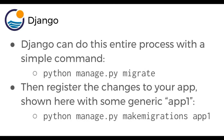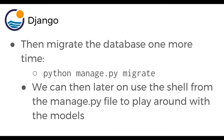We talked about this earlier in the course when we got a warning from Django telling us to do this migrate call. But now, since we actually are going to work with models, we can do it. After that, we then register the changes to our app, shown here with some generic app. So we would say python manage.py makemigrations and then your application name — app1, first app, whatever you happen to call it. We then migrate the database one more time: python manage.py migrate. And then later on, we can actually use the shell from the manage.py file to play around with the models.